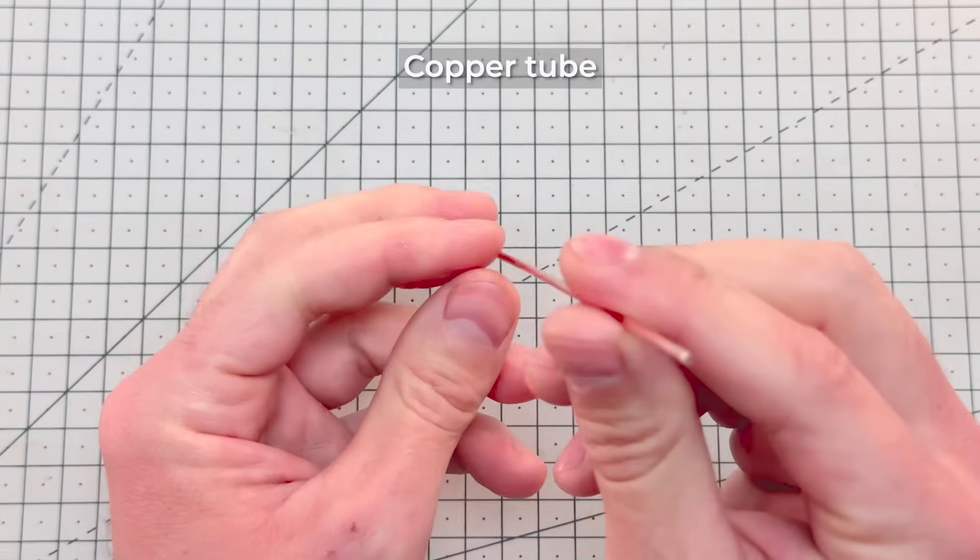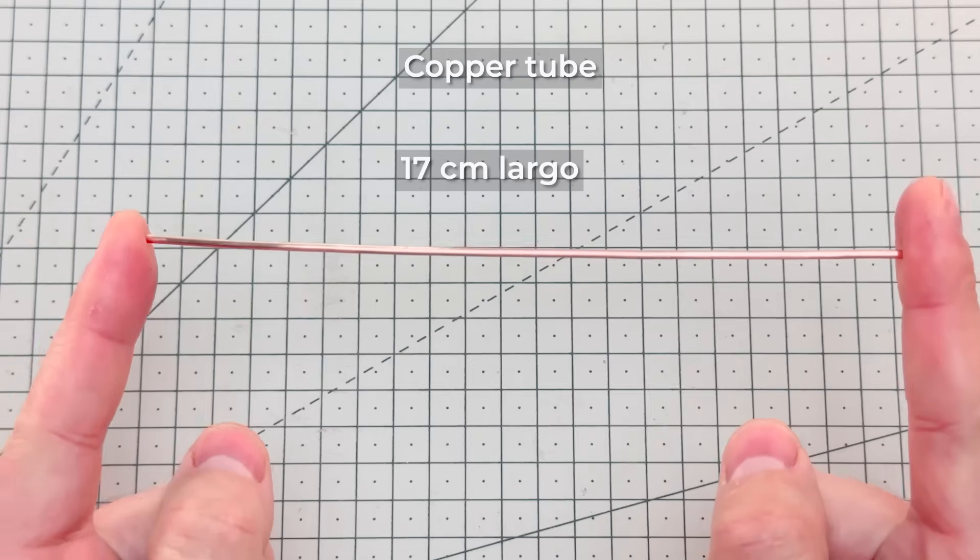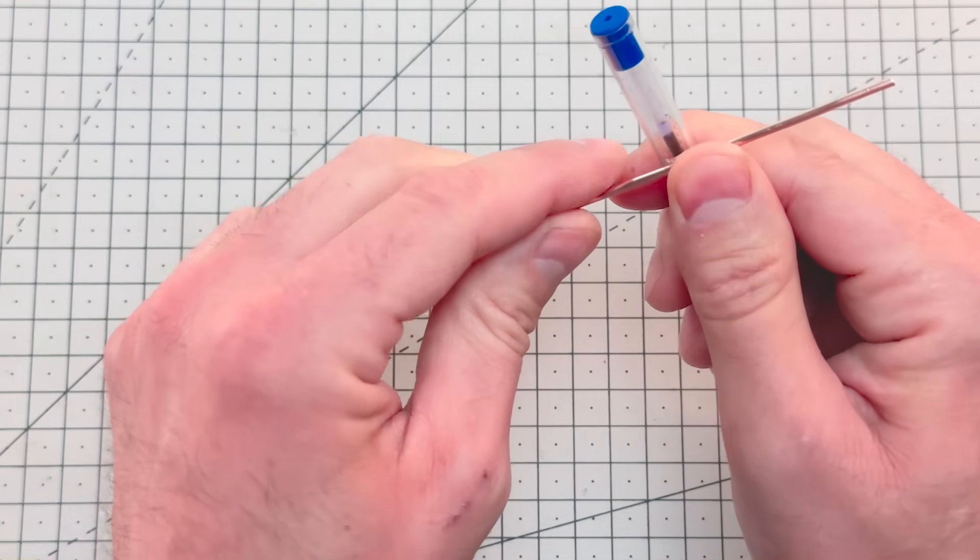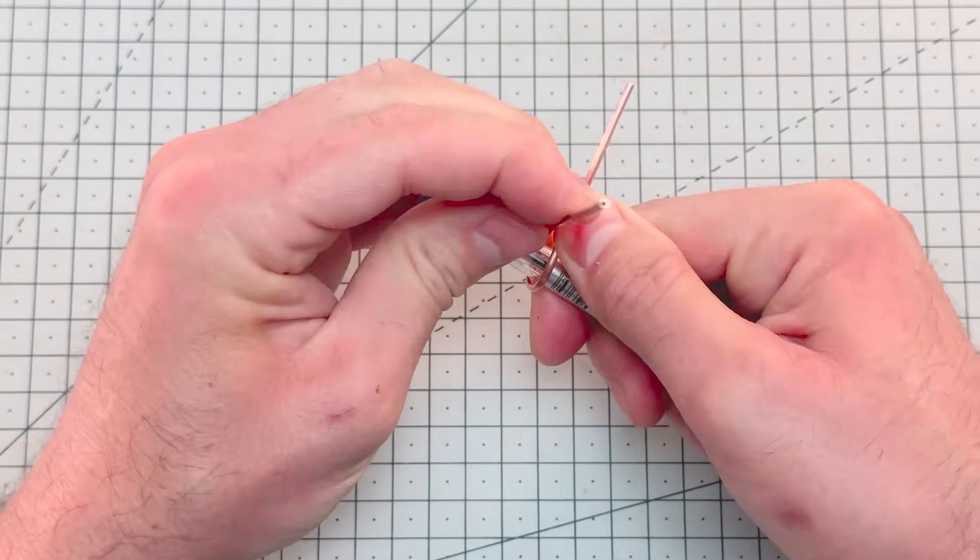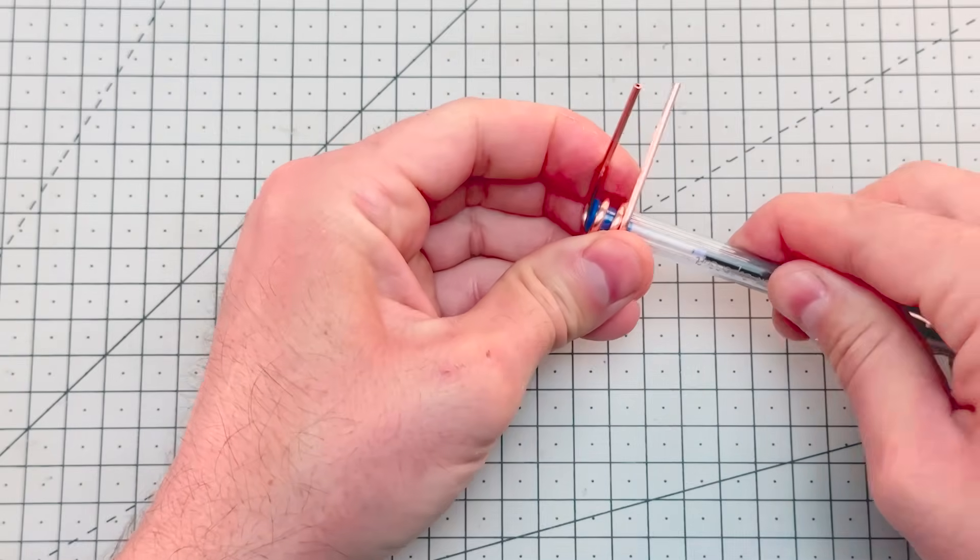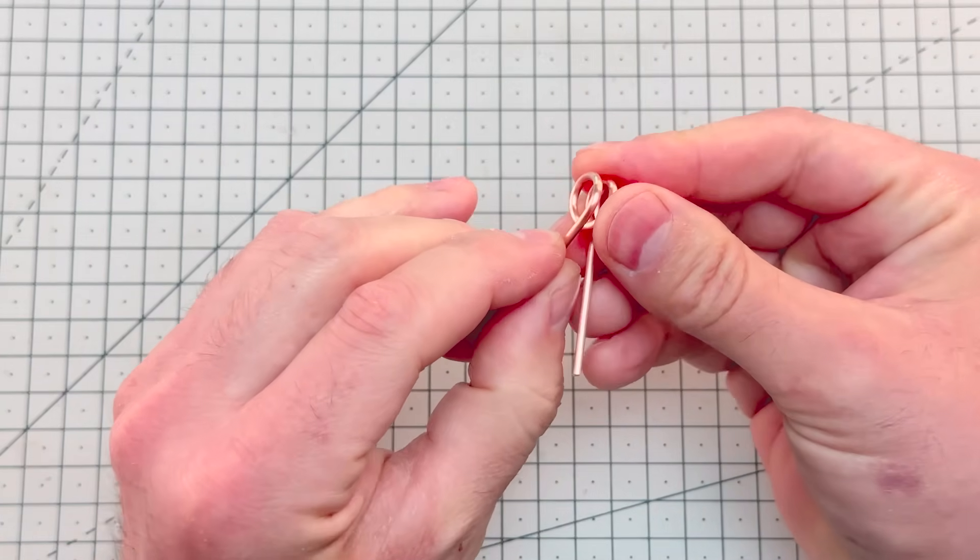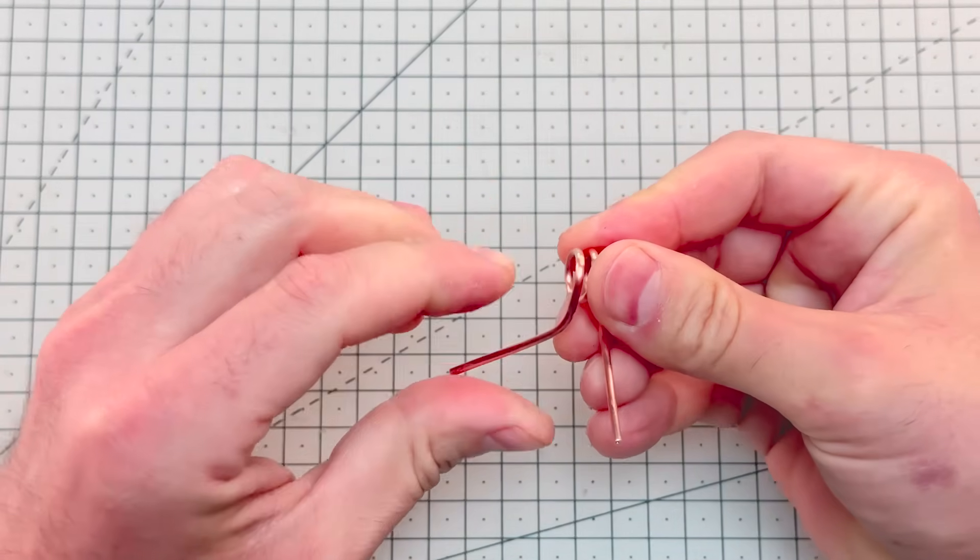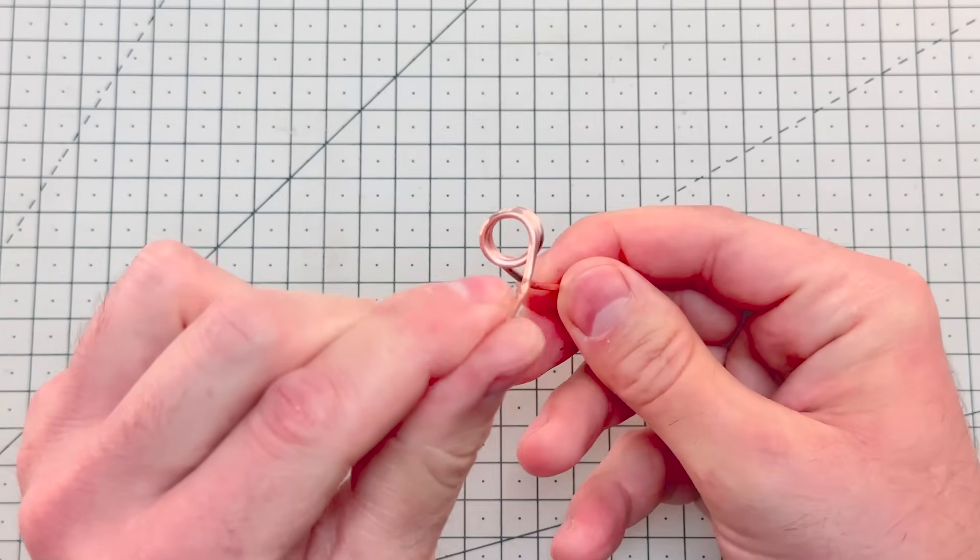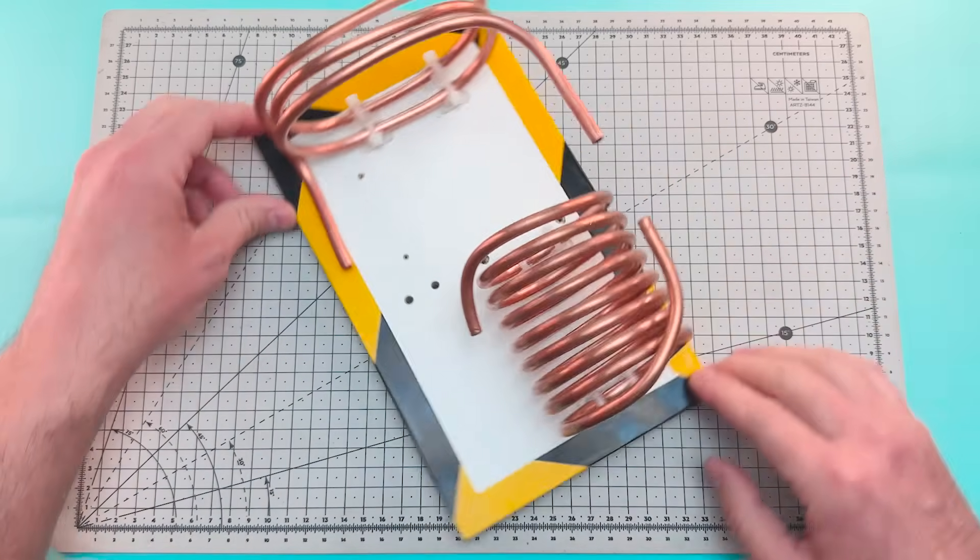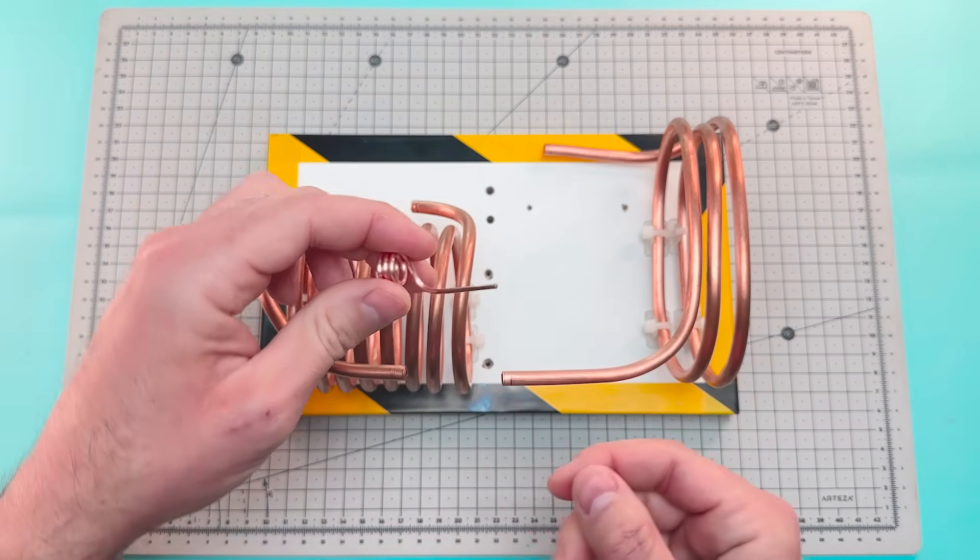Now we're going to take a copper tube called a capillary tube. This small tube will create a sudden pressure drop in the evaporator, which will produce the cooling effect. We'll bend it using a pen. Two or three turns will be enough. We're going to insert the capillary tube into the end of the condenser and the other side into the evaporator.